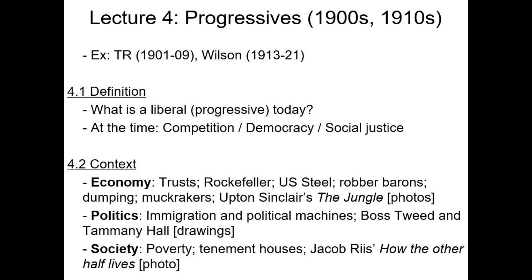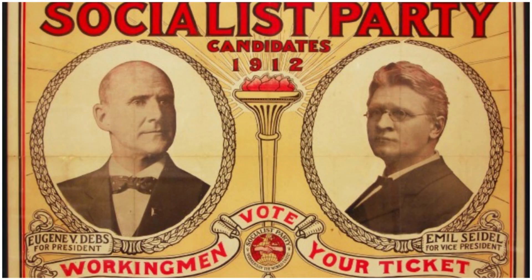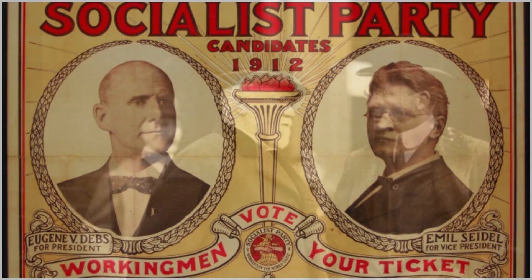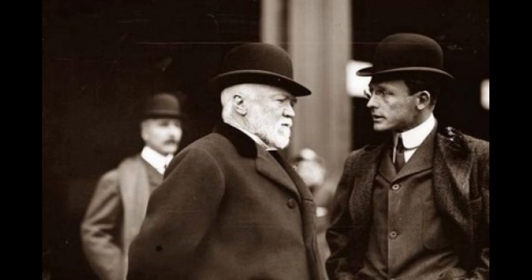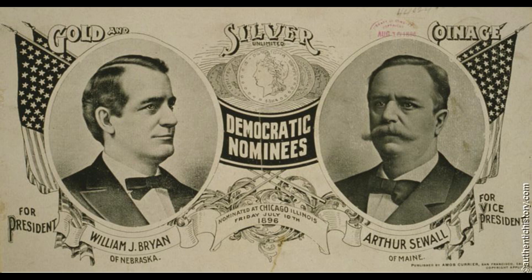Bonjour and welcome back to the history of the United States since 1877. Over the past few lectures we've explored various political movements of the Gilded Age and the Progressive Era, specifically the socialists and the communists and the trade union movement, as well as the conservative movement that was dominant in the 1870s and 80s, and the populist movement that was a big thing in the 1880s and 90s, specifically with the 1896 election and William Jennings Bryan.